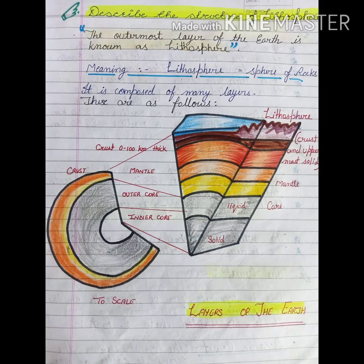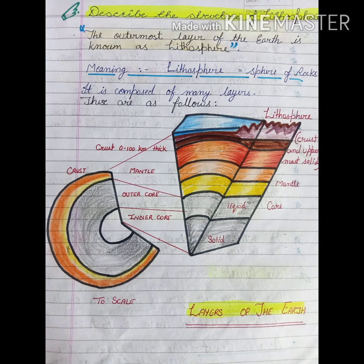The atmosphere topic is completed. Now we talk about the lithosphere, which is a very important sphere on the earth. The outermost layer of the earth is known as the lithosphere. Our earth has three main layers, and lithosphere refers to the outermost one. 'Litho' is a Greek word meaning rocks, so lithosphere means sphere of rocks.